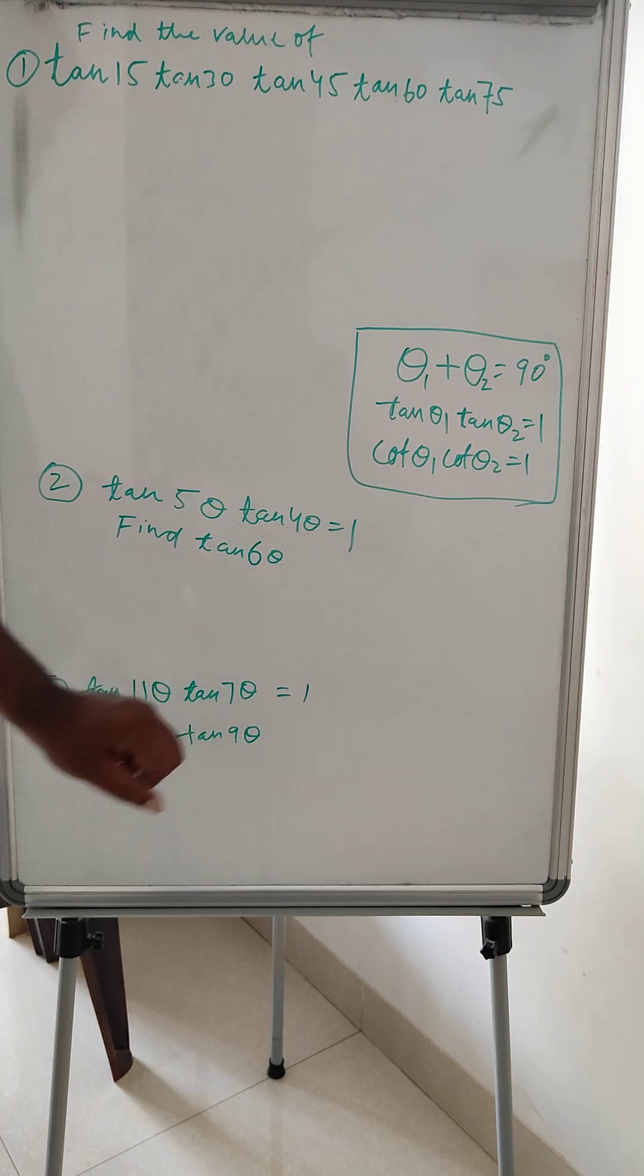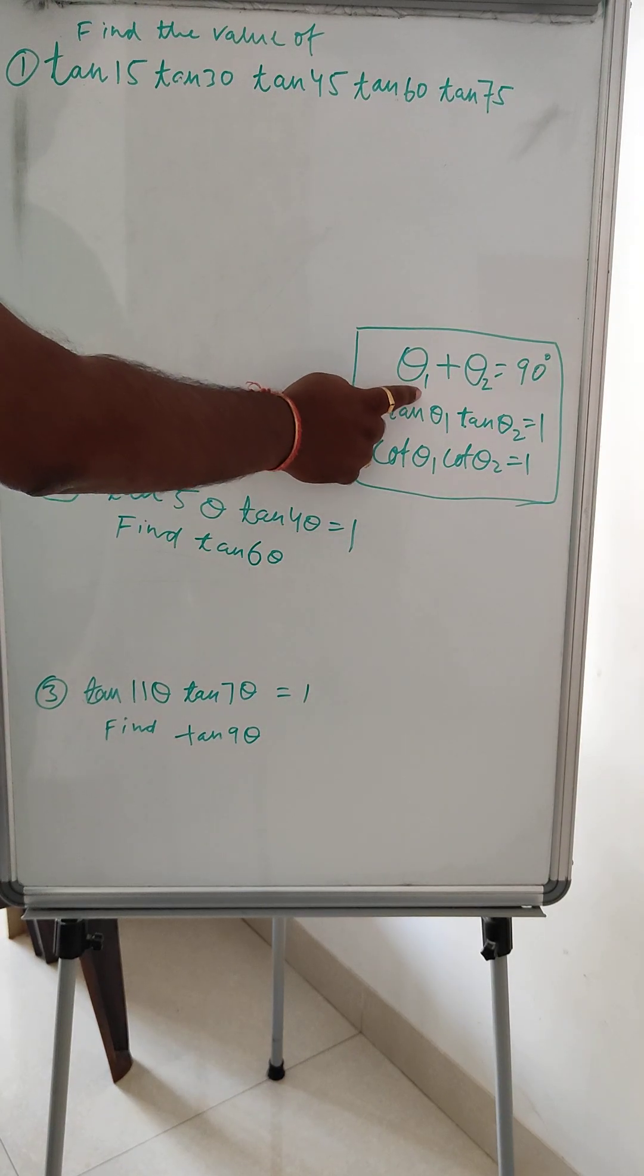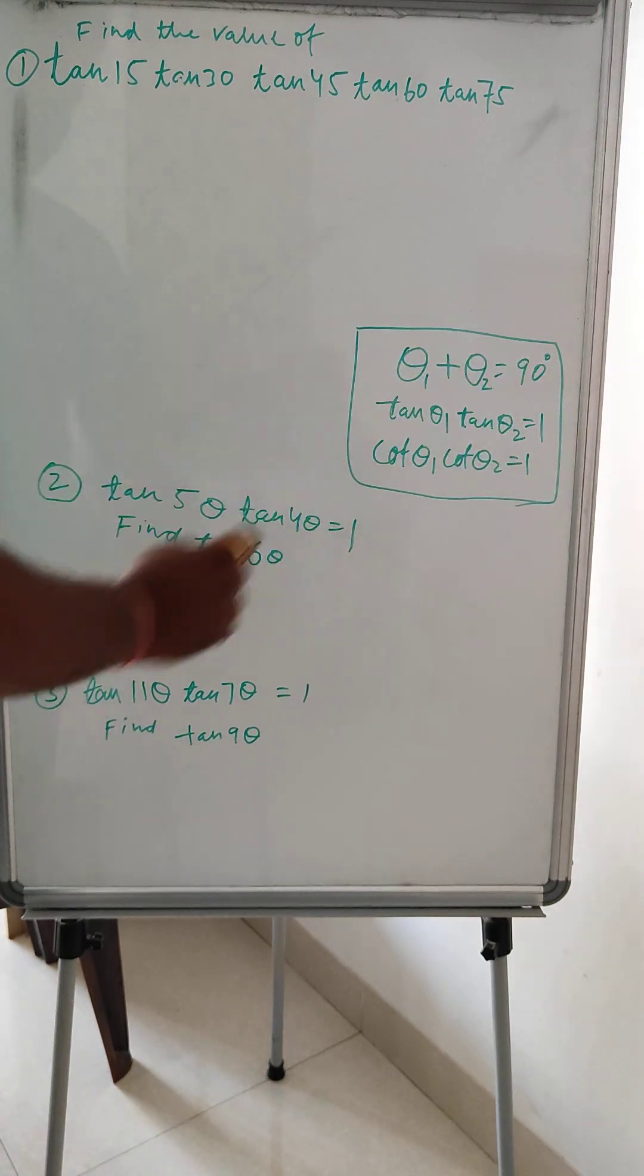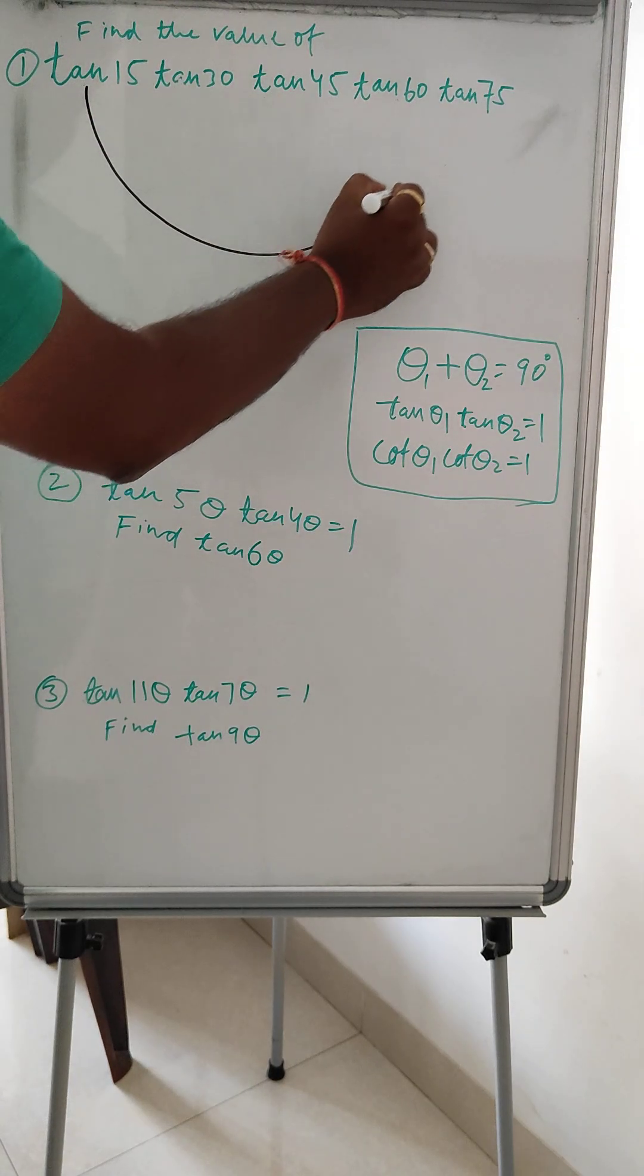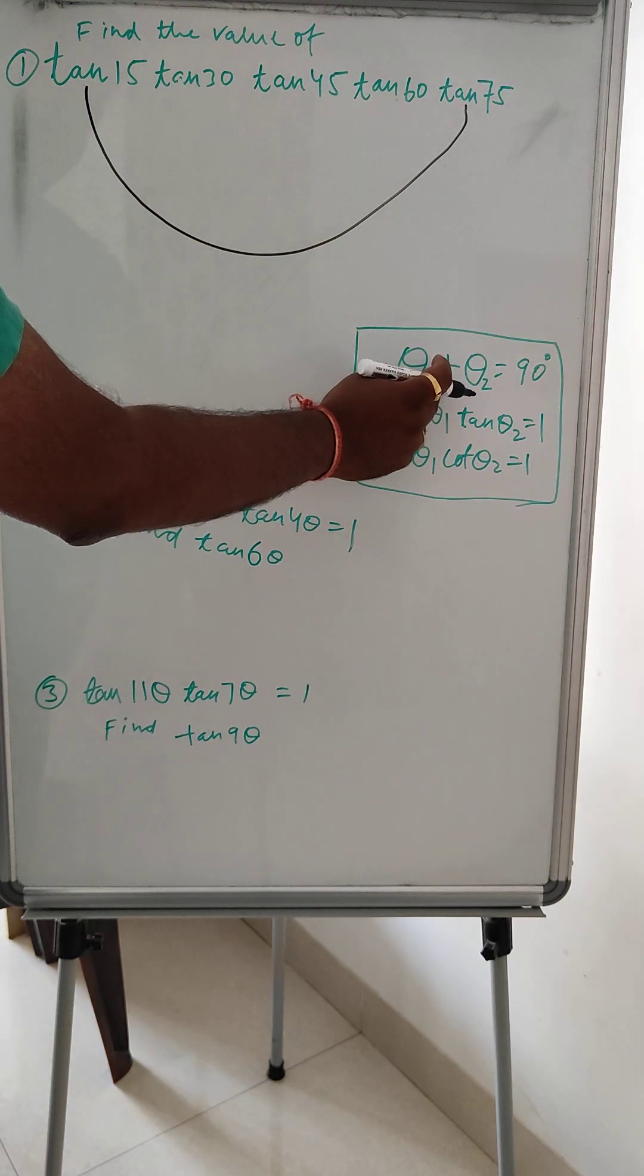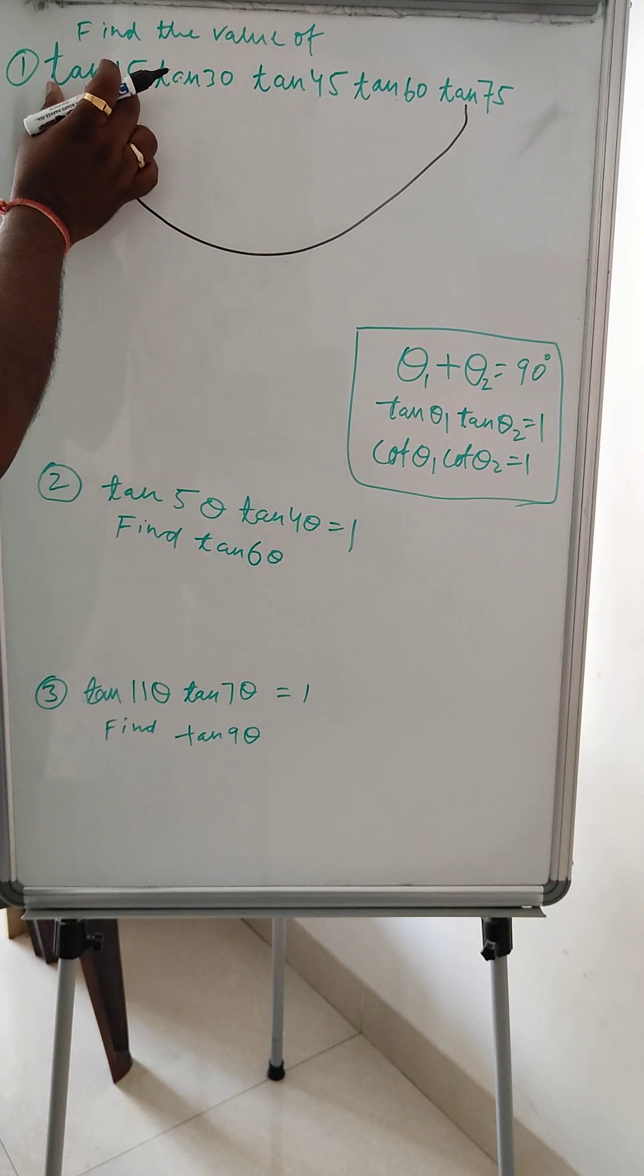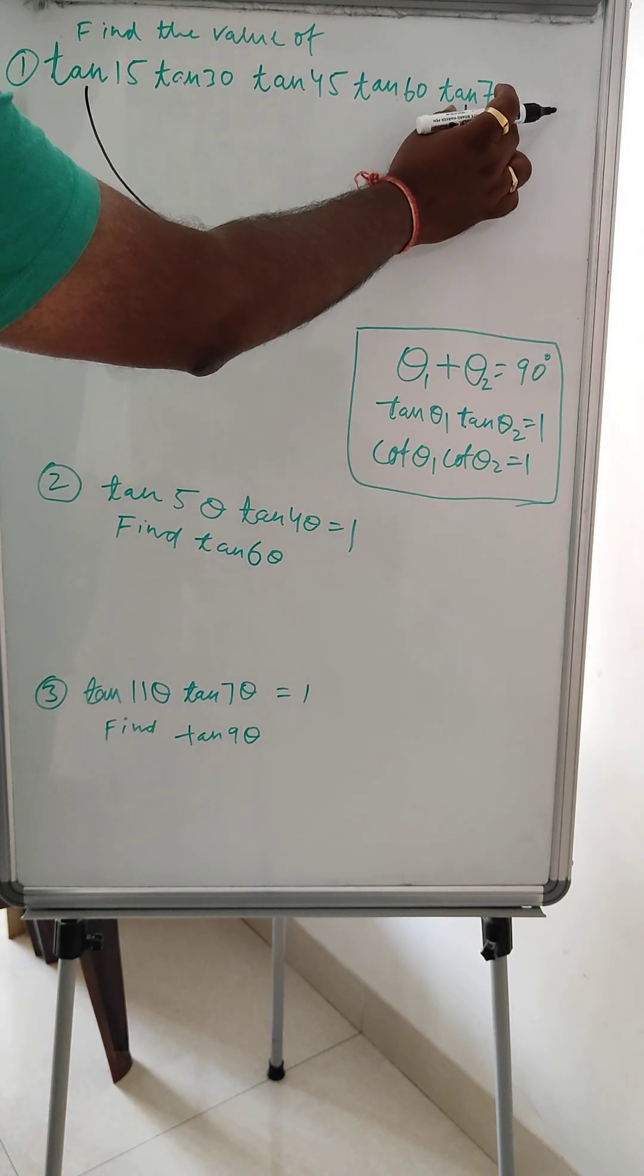Okay, so here we can try to solve this. See, there is a rule: if θ1 + θ2 = 90°, then tan θ1 × tan θ2 = 1. If we see here, tan 15° and tan 75°—this is θ1, this is θ2—15 plus 75 is 90°, right? Then tan 15° × tan 75° value will be 1.